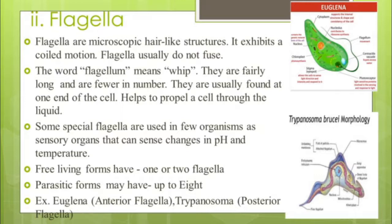Another locomotory organelle in Protozoa is flagella. It is a microscopic whip-like structure that exhibits a coiled motion. Flagella usually do not fuse; the word 'flagella' means whip. They are fairly long and fewer in number, usually found at one end of the cell, and help to propel the cell through liquid. Free-living forms have one or two flagella, but parasitic forms may have up to eight.